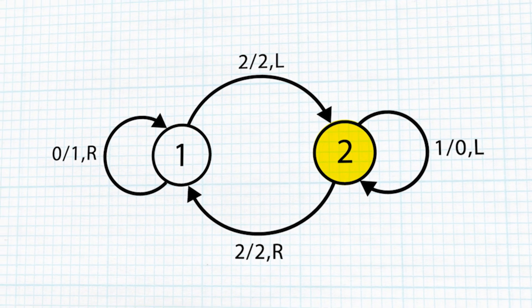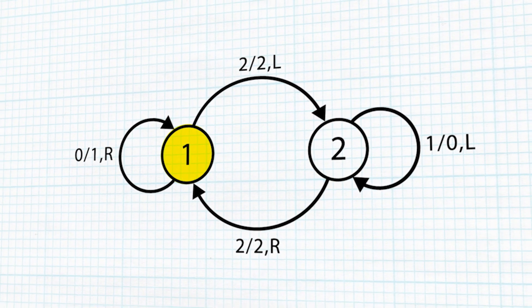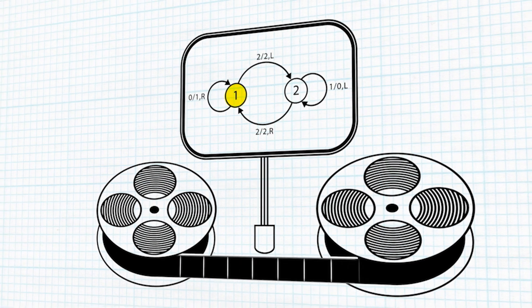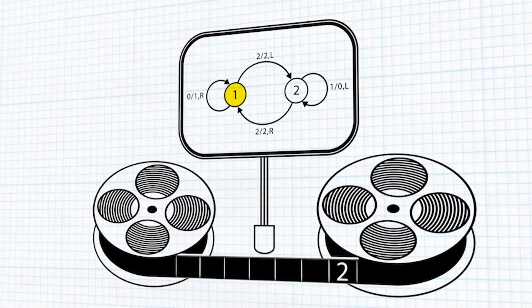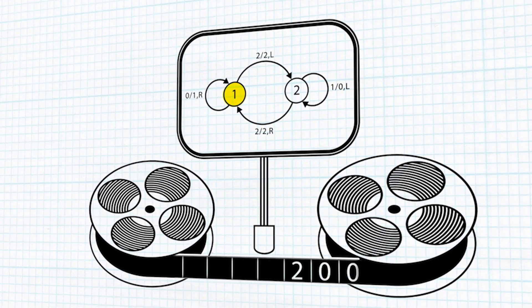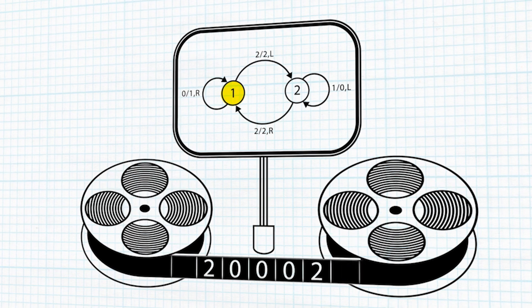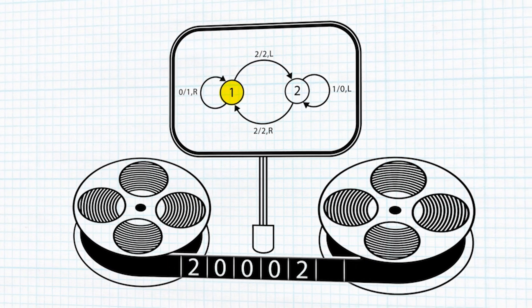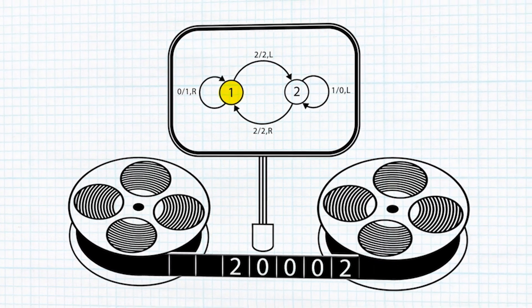By default, we'll start here at state one. The ZigZag program also depends on the tape having a certain preset configuration of symbols on it. At the very beginning, the playhead has to start right here in the information.